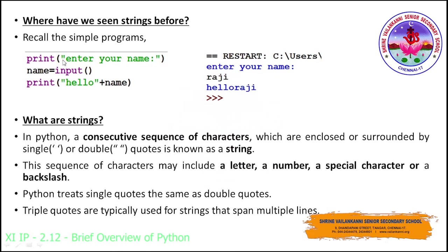Consider this example: print of 'Enter your name' and name equal to input function. This input function helps you to fetch input from the user, which will be assigned to the name variable. In turn, this name variable is retrieved and we are concatenating it along with the 'Hello' string. Enter your name will be displayed, and if the user inputs 'Raji', then 'Hello Raji' will be printed. If you need a space between both strings, you have to provide a space before the closing quotes.